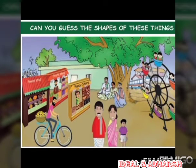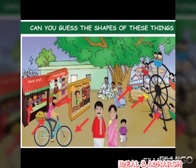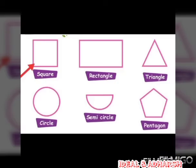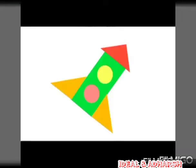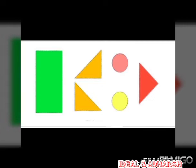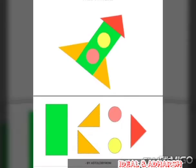Can you guess the shapes of these things? The shapes are square, rectangle, triangle, circle, semicircle, and pentagon. This is a combined figure — it has many 2D shapes. What 2D shapes are there? Yes — rectangle, triangles, circles. Are you clear?